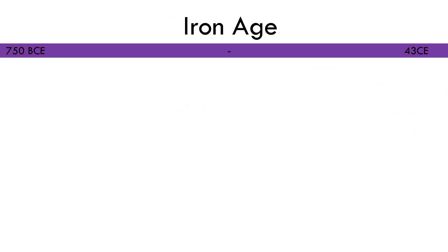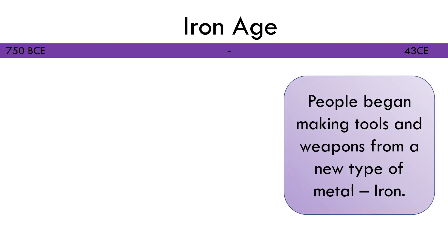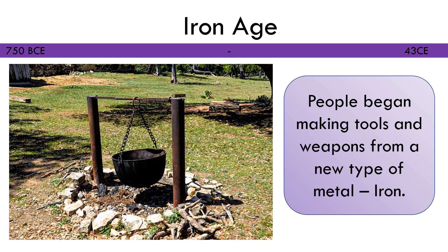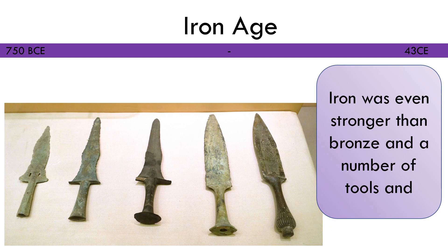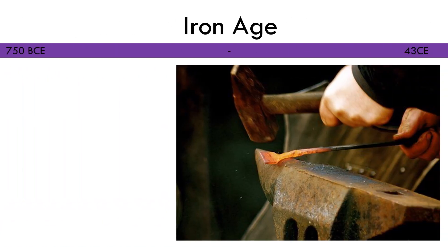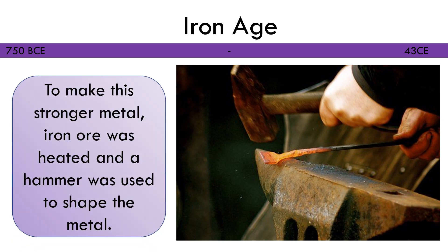Next we will look at the Iron Age, which began around 750 BCE and ended in 43 CE. During this time people began making tools and weapons from a new type of metal — Iron. Iron was even stronger than Bronze. Iron ore was heated and a hammer was used to shape the metal.